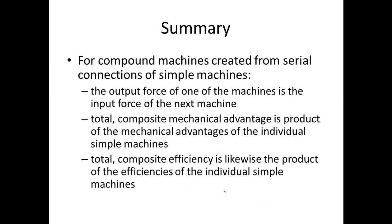In summary, for compound machines created from a serial connection of simple machines, the output force of one machine is the input force of the next. Therefore, the total composite mechanical advantage is the product of the mechanical advantages of the individual simple machines, and the total composite efficiency is likewise the product of the individual efficiencies. This is useful for designing these types of machines.